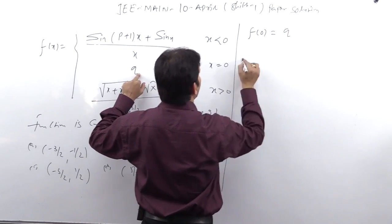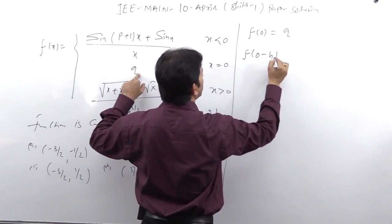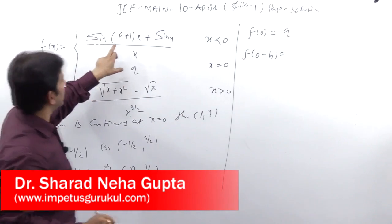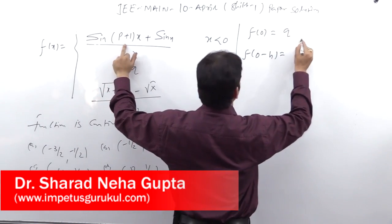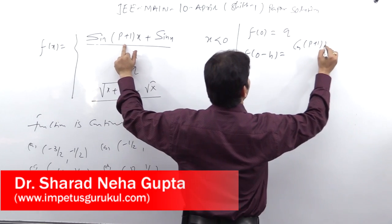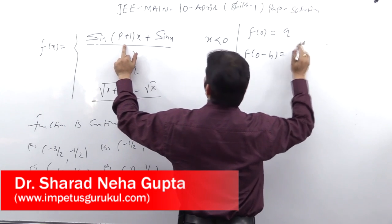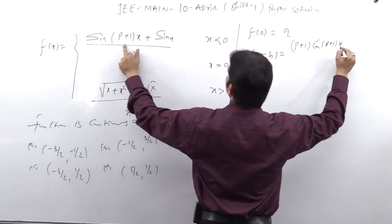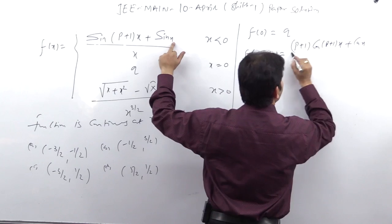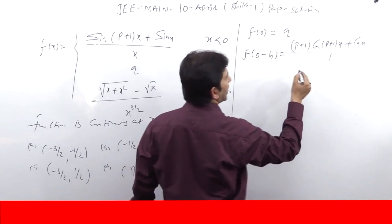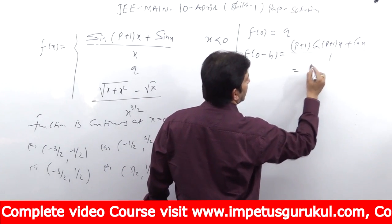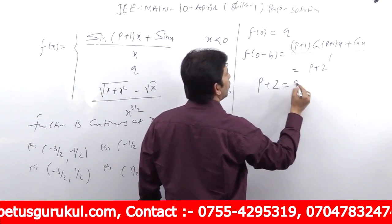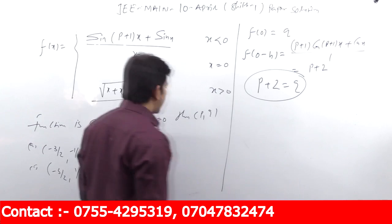F(0), F(0-), F(0+), when we write logically, function continuous, then we can do this. So we can write cos(P+1) into x into (P+1) into cos(P+1)x plus of cos x. So I will write P plus 2, then you will write P plus 2 equal to Q. Option help obviously.